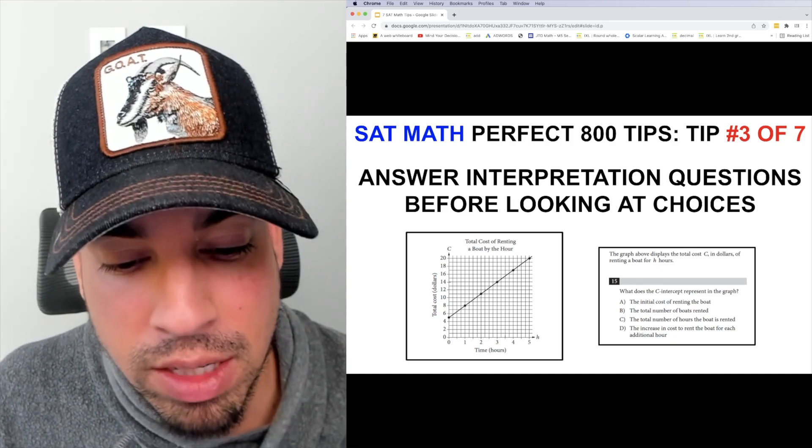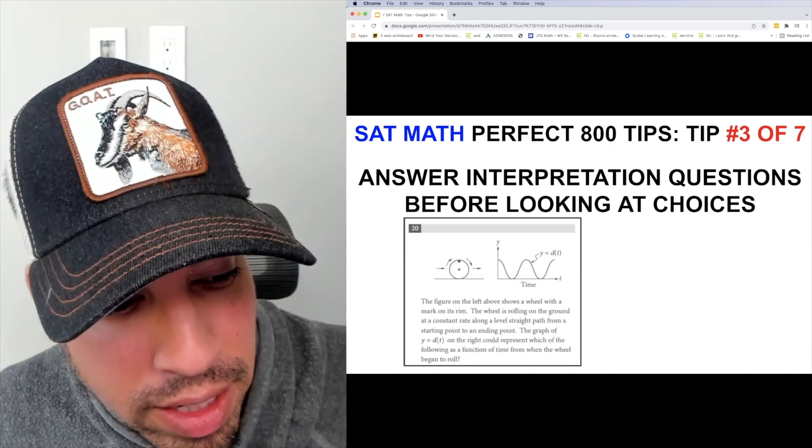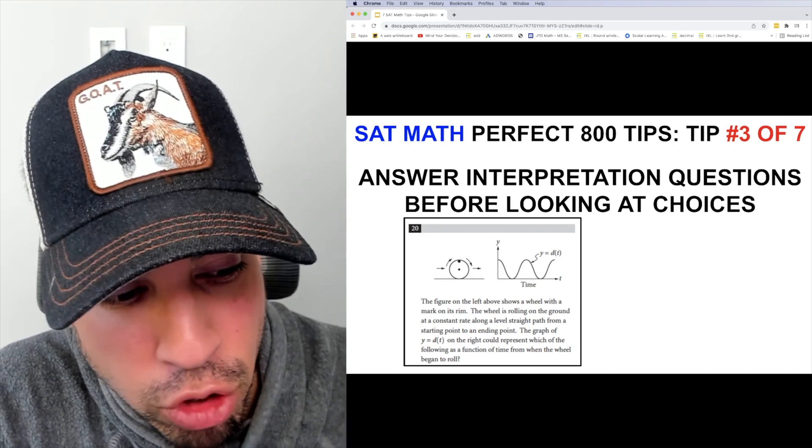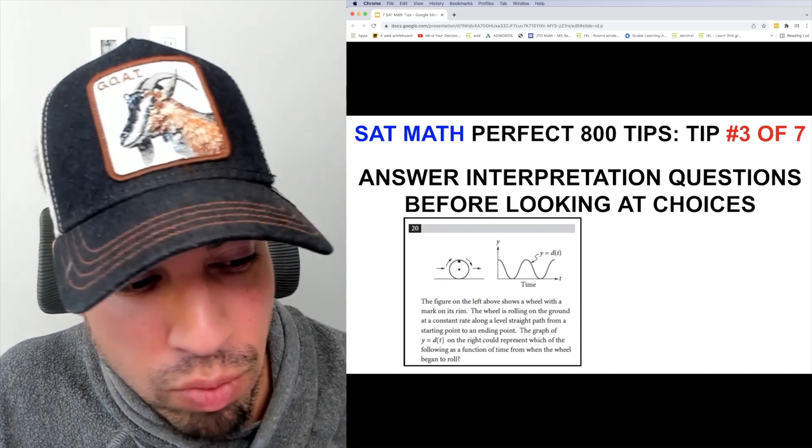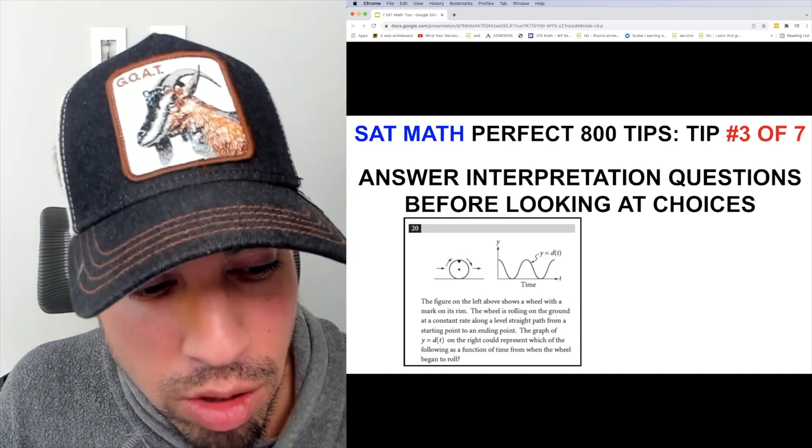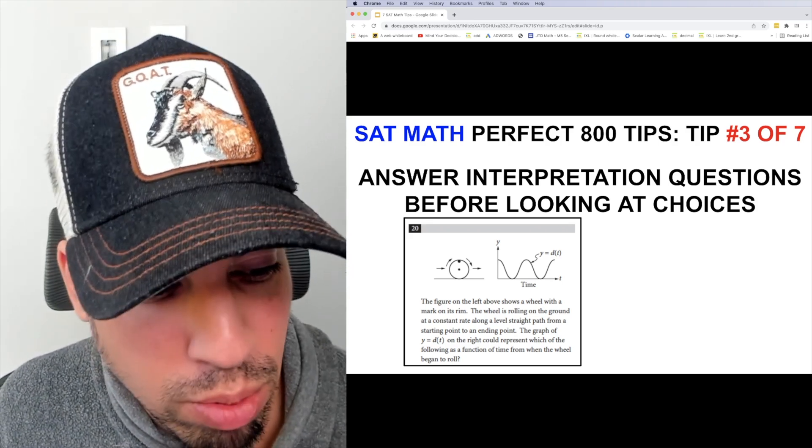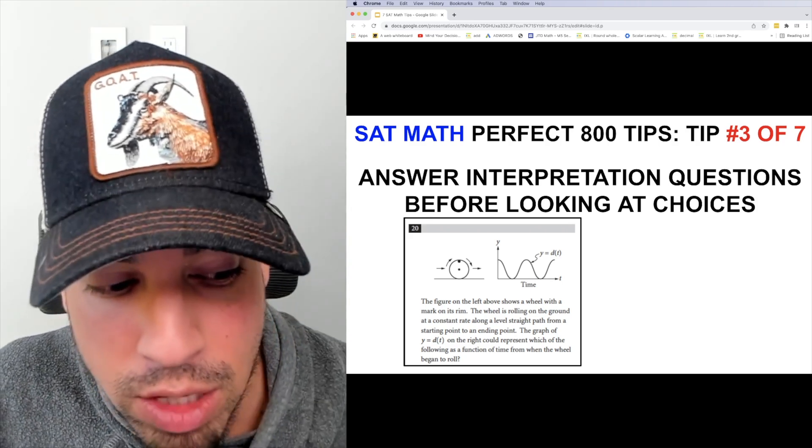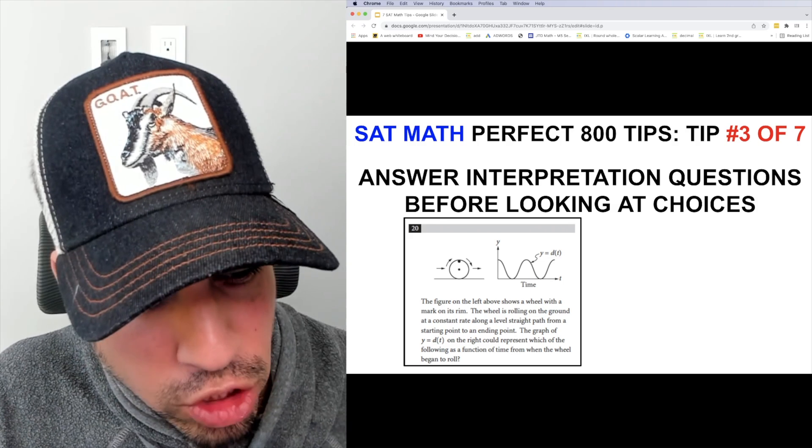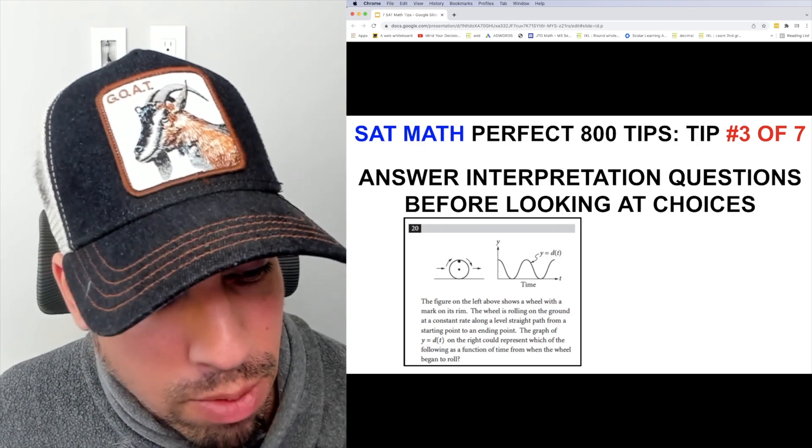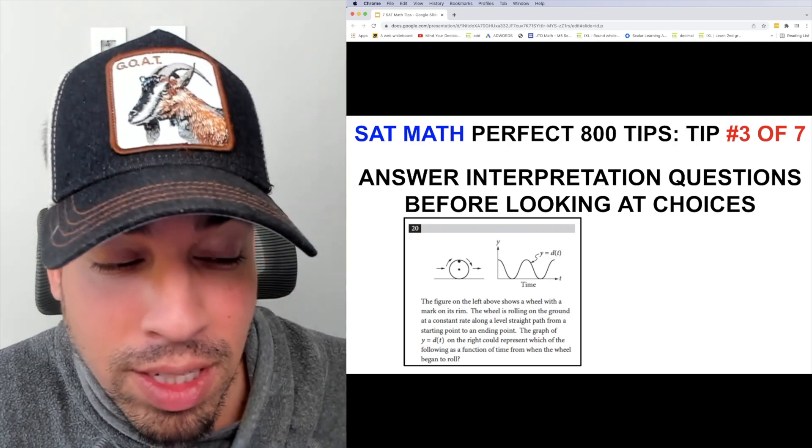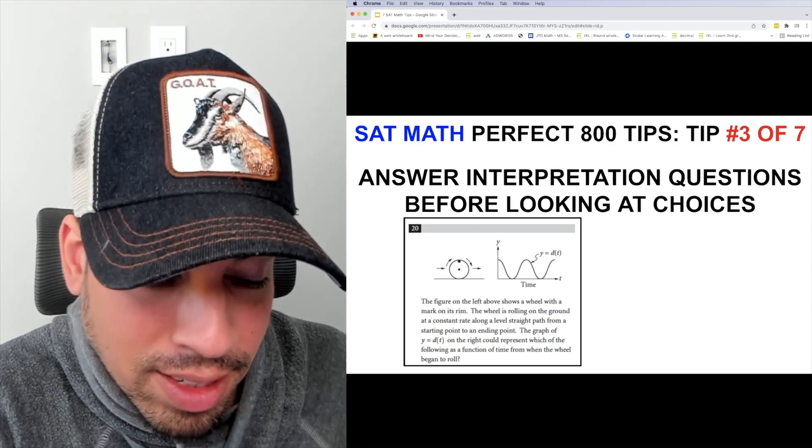Here's another example. It says the figure on the left above shows a wheel with a mark on its rim. The wheel is rolling on the ground at a constant rate along a level straight path from a starting point to an ending point. The graph of y equals d of t on the right could represent which of the following as a function of time from when the wheel began to roll. So before looking at the answer choices, I'm trying to understand, it's like this wave, it's a sine wave. So what probably would make sense is going up, down, up, down, up, down.